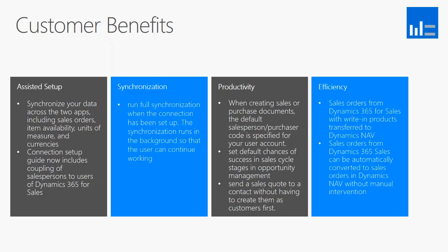From an efficiency standpoint, Microsoft made two huge improvements to this connector that also exist in NAV 2016. One is the ability to use write-in products — a CRM concept for selling a customer something you don't already have an item number for. You can literally type in anything and sell them that thing, though in the NAV ecosystem that doesn't work as well since you need an item number to price and order it correctly.